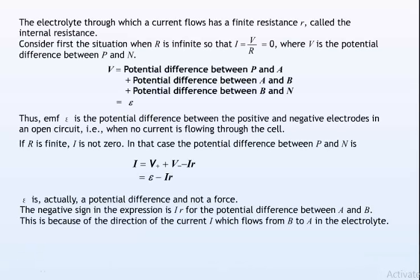The electrolyte through which a current flows has a finite resistance r, called the internal resistance. Consider first the situation when r is infinite, so that I equals V by r equals zero, where V is the potential difference between P and N. V equals potential difference between P and A, plus potential difference between A and B, plus potential difference between B and N equals epsilon.